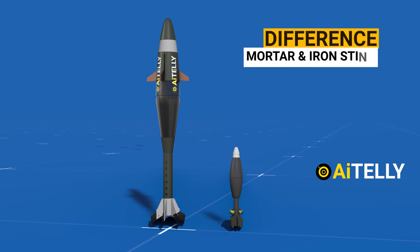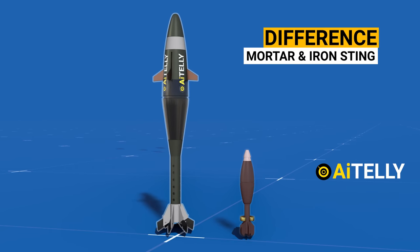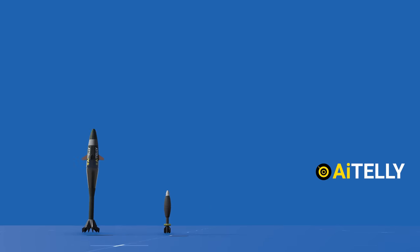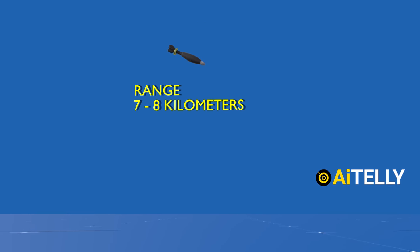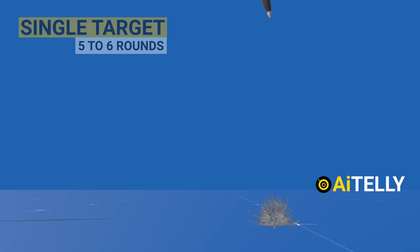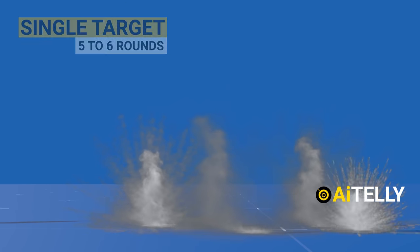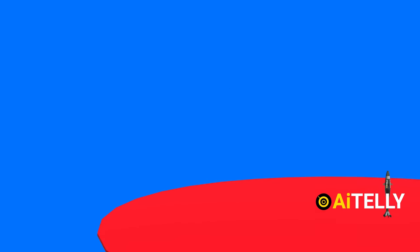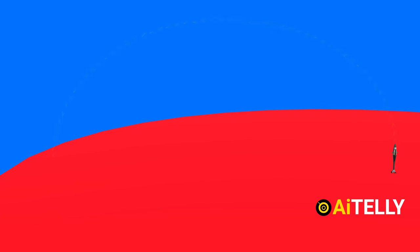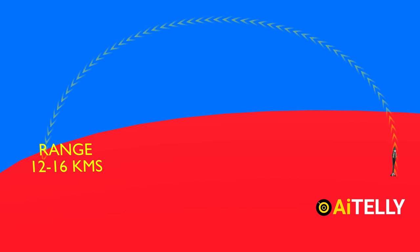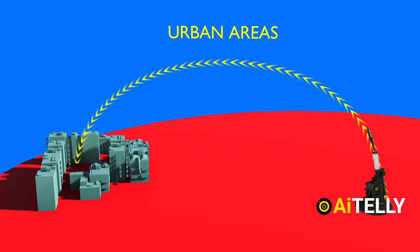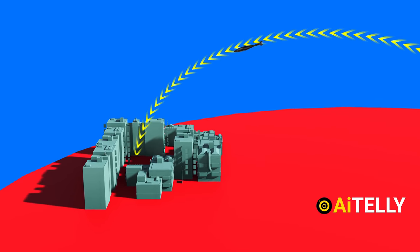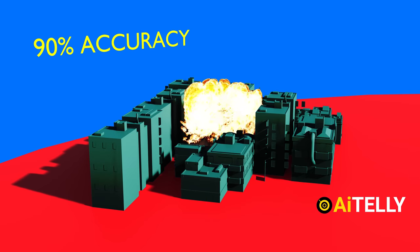But what is the difference between a standard mortar round and an Iron Sting? A standard mortar typically has a range of about 7 to 8 kilometers and often involves indiscriminate firing requiring almost 5 to 6 rounds for a single target. In contrast, Iron Sting rounds can reach distances of up to 12 to 16 kilometers. The Iron Sting is specially designed to target urban areas with remarkable precision, boasting an impressive 90% accuracy rate.